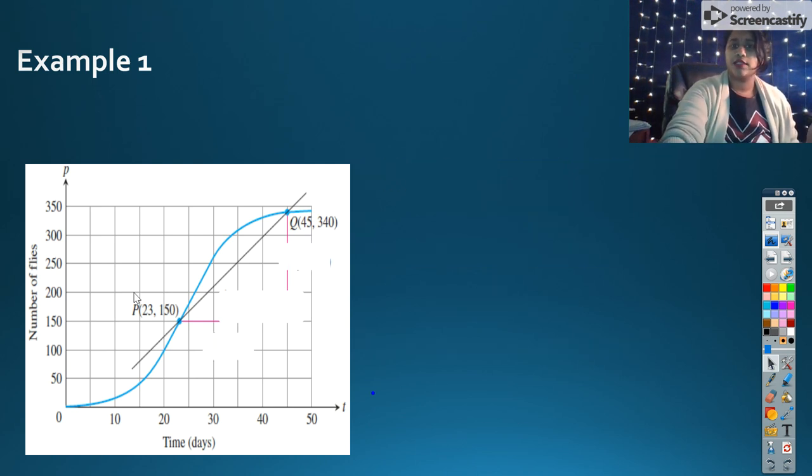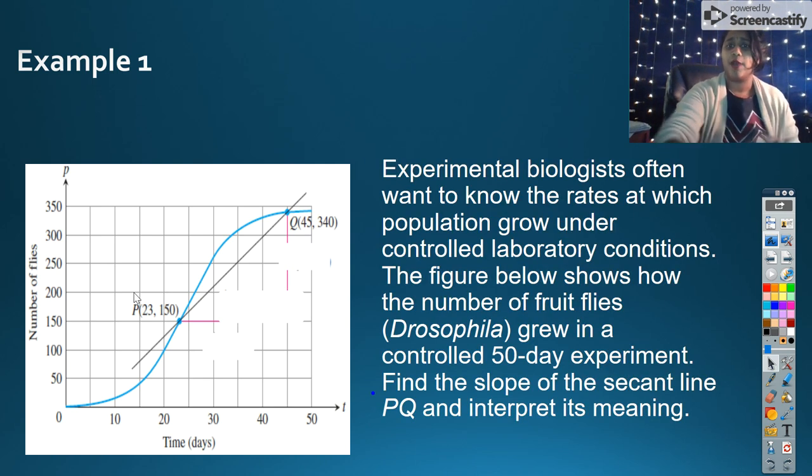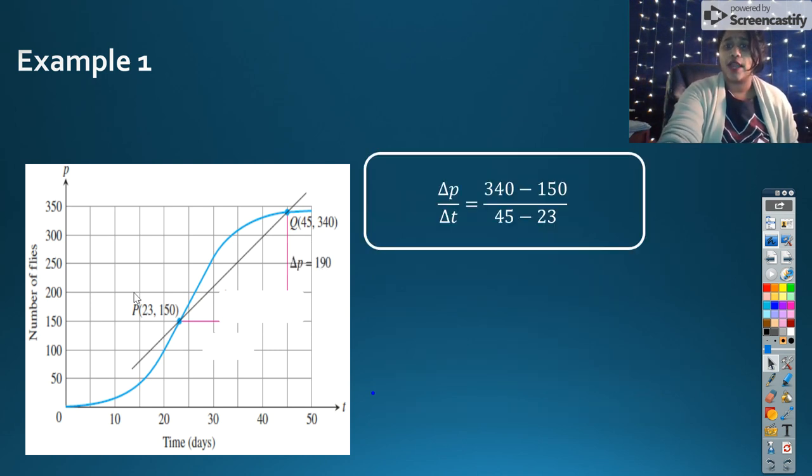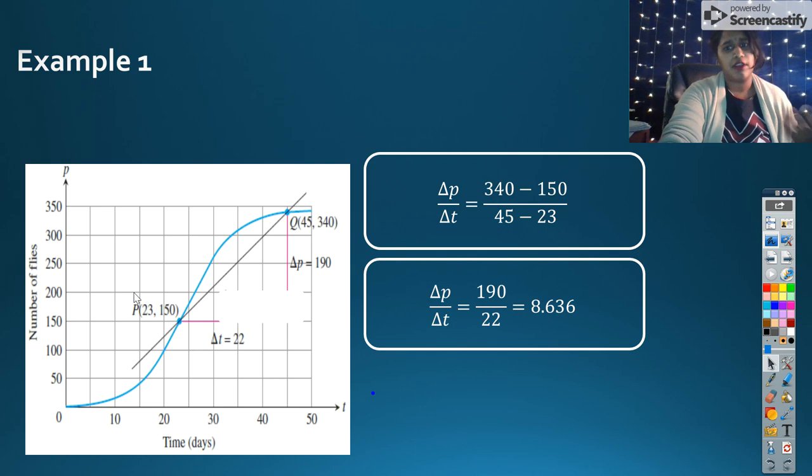However, what are we talking about? Let's think of this in context. We're talking about fruit flies and their population. So how many fruit flies in a population? Are there 8.63? No, that's not true of a population. There can't be 8.6 of a fruit fly. So we're going to do an estimate.